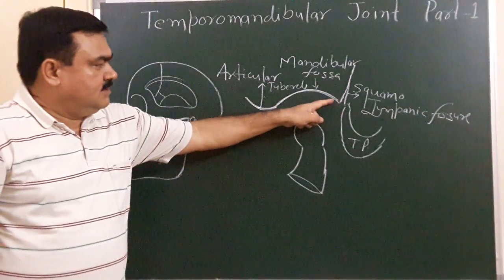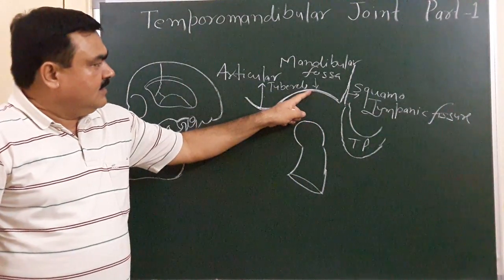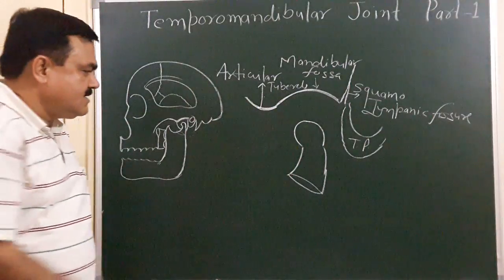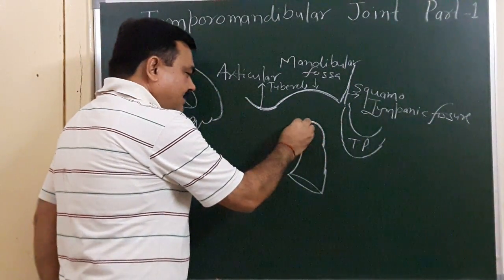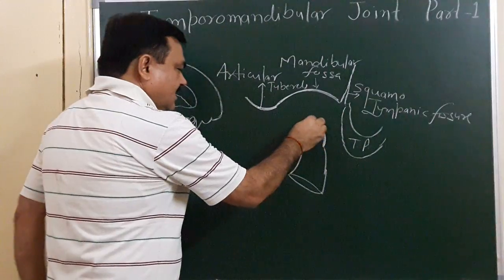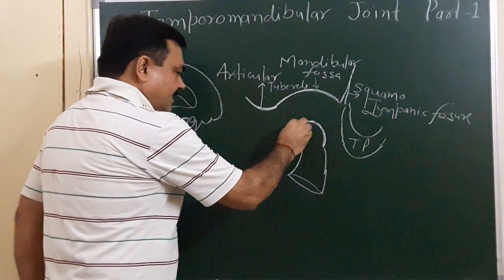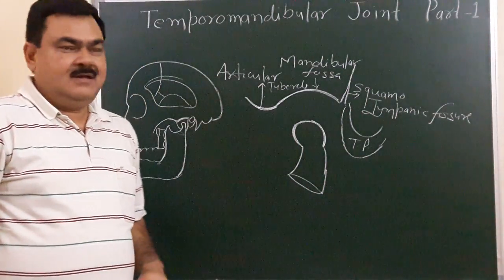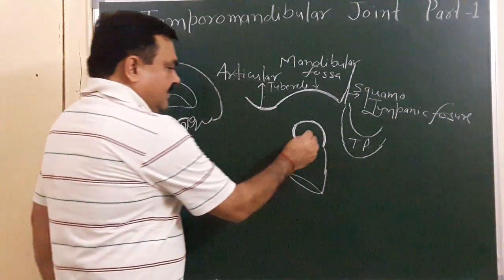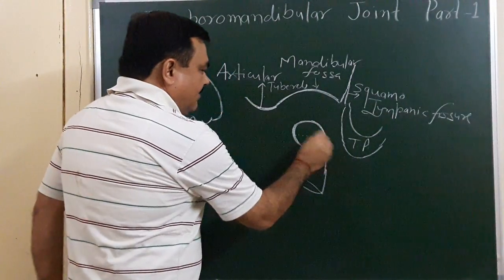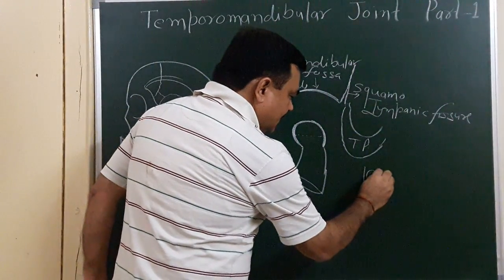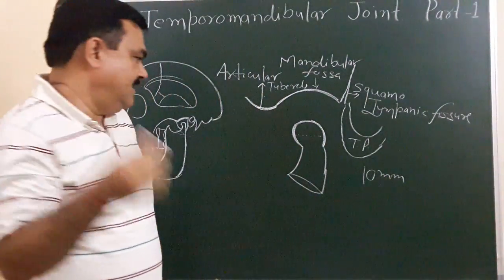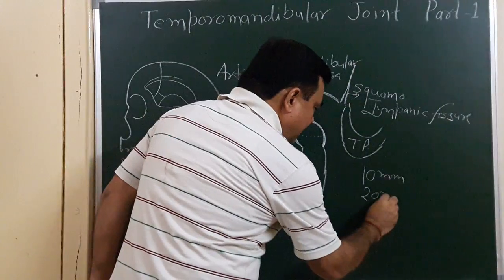This articular surface is the mandibular fossa, and this is the articular tubercle or articular eminence. This is the head of the mandible. The condyle shape — its anteroposterior dimension of the head is about 10 mm, and its transverse dimension is about 20 mm.